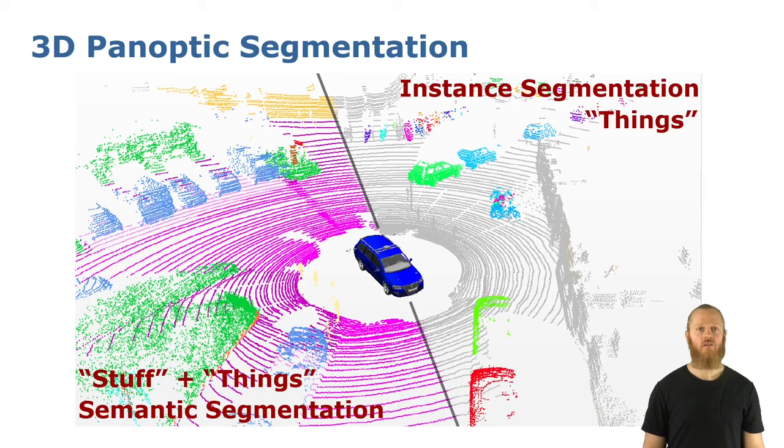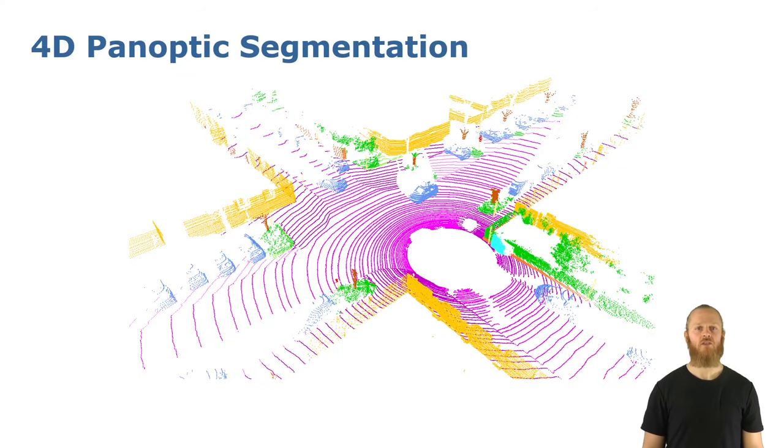In the context of self-driving cars, spatial temporal scene understanding is crucial to navigate the environment. The task of 3D panoptic segmentation aims to segment the scene and also identify other agents, which means performing 3D semantic and 3D instance segmentation together. 4D panoptic segmentation extends this task to the temporal domain.